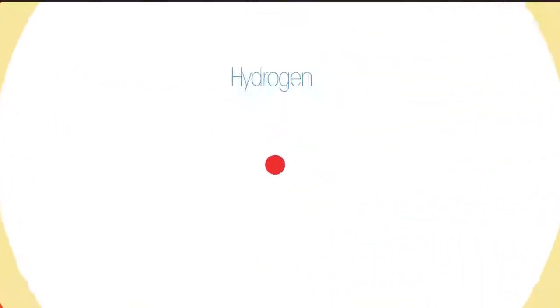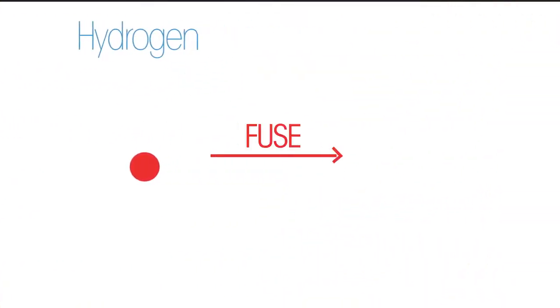A star forms when it is hot enough for hydrogen nuclei to fuse to form helium. For more about nuclear fusion, watch this video.